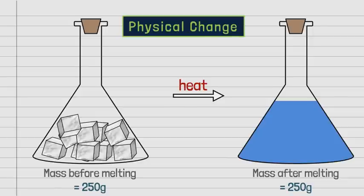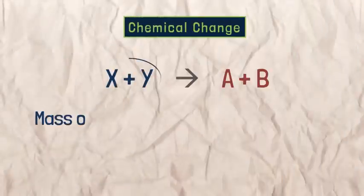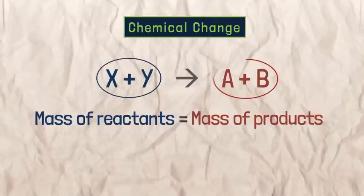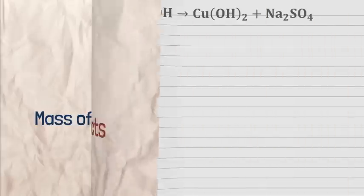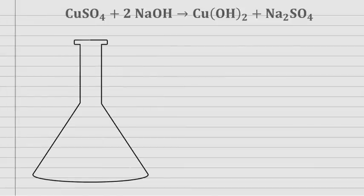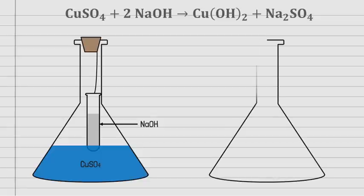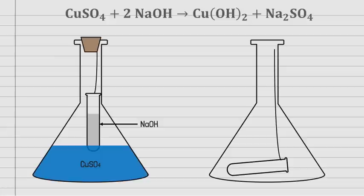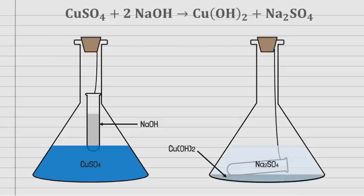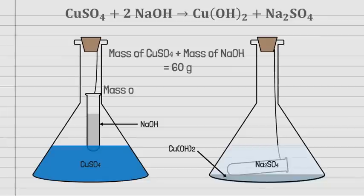Chemical Change: In a chemical change, mass before and after the reaction will remain the same. Mass of all the reactants equals the mass of all the products. For example, put copper sulfate in a conical flask and immerse a test tube filled with sodium hydroxide in it. On mixing both reactants, we get blue precipitates of copper hydroxide and colorless liquid sodium sulfate. If the reactants weighed 60 grams, the products will also be 60 grams.